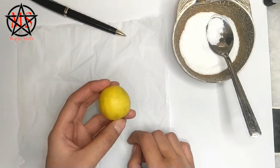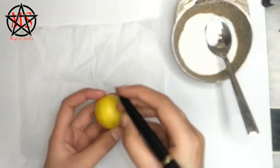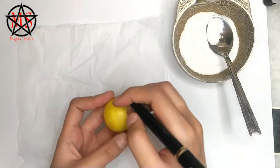Firstly, take the lemon and write the name of the person you want to control.